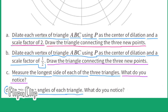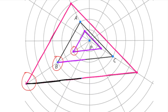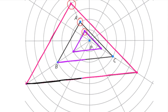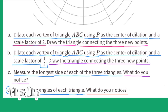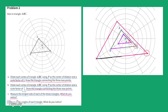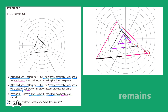Part D: Measure the angles of each triangle. Instead of using a protractor, I'll compare corresponding angles. I notice that the measure of each angle remains unchanged as the scale factor changes.